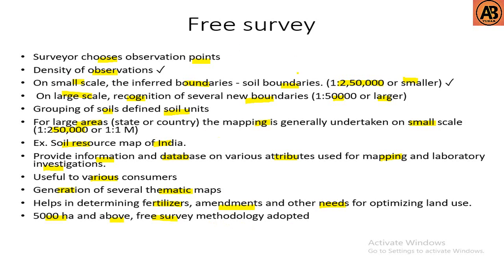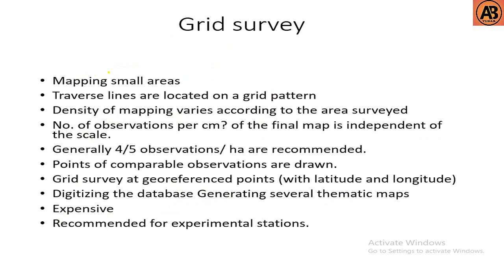Features of grid survey include mapping small areas where traverse lines are located on a grid pattern. Density of mapping varies according to the area surveyed, and the number of observations per centimeter of the final map is independent of scale — generally five observations per hectare are recommended. Points of comparable observations are drawn at geo-referenced points with latitude and longitude, digitizing the database and generating several thematic maps. It is very expensive and recommended for experimental stations.